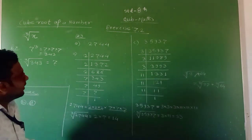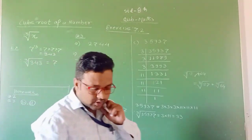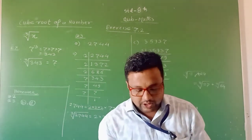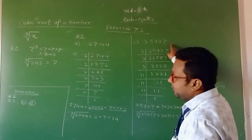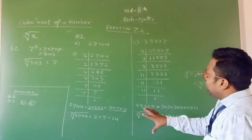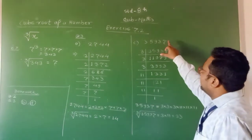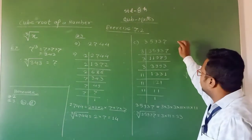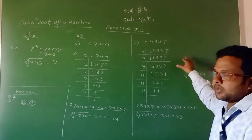One more example from question number 3. The number given is 35,937. We will use the same method — first find the prime factors for this number. This number is odd, so it is not divisible by 2, the first prime number.